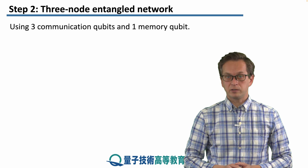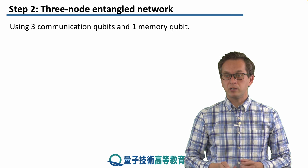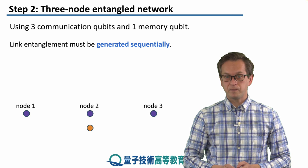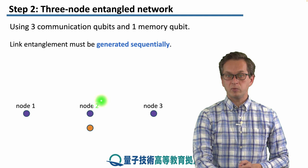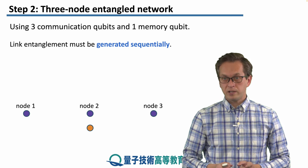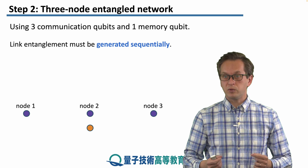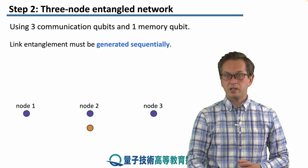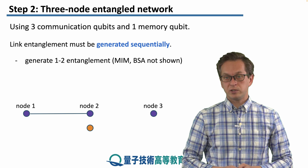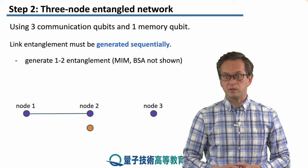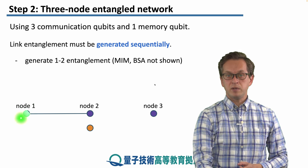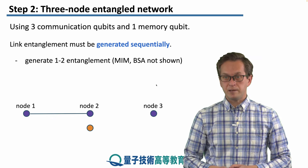Now let's see how the protocol worked. How can we use three communication qubits and one memory qubit to establish either a three-qubit GHZ state or an entangled Bell pair between non-neighboring nodes of the network? We have node one with the communication qubit, node two with the communication qubit and the memory qubit, and node three with a single communication qubit. Only the communication qubits can be used to establish entanglement between neighboring nodes, meaning that entanglement at the link level must be generated sequentially. Node one and node two establish link-level entanglement using MIM architecture — both emit a photon entangled with their respective communication qubits, which meet at the BSA along the link where they interfere.